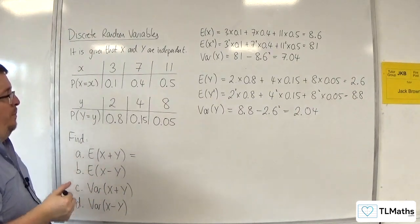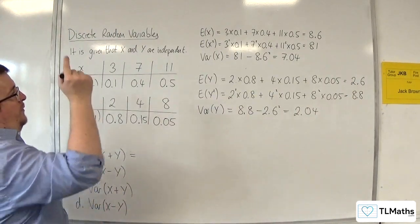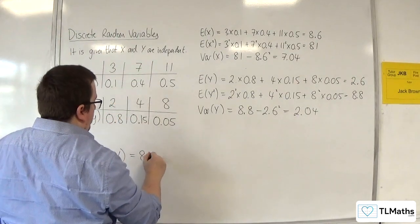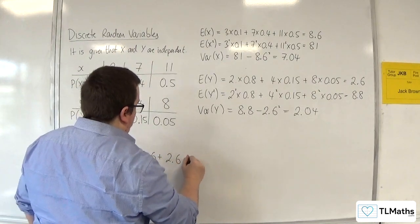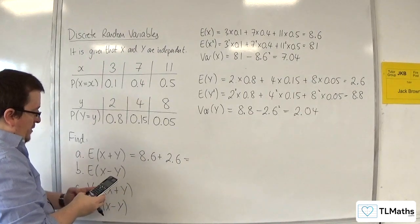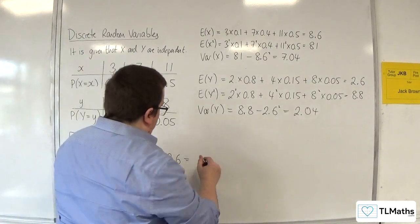E of X plus Y is going to be equal to E of X plus E of Y. So we've got the 8.6 plus the 2.6, so 11.2.